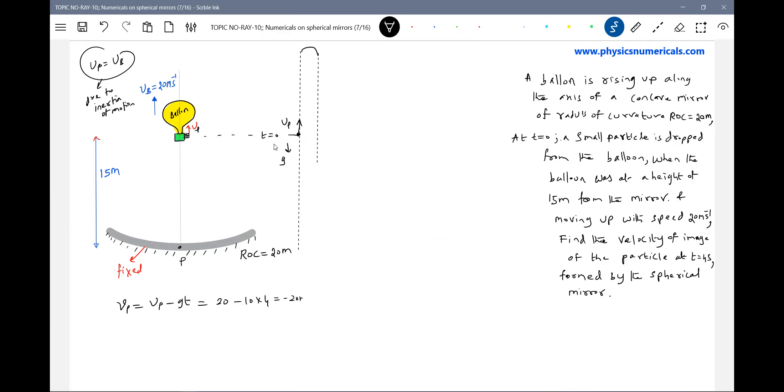So minus 20 meter per second. So what do you mean by negative sign? At that instant, the particle will be moving vertically down. It'll be having a velocity vertically down. So it should be exactly at this position. This should be the velocity of particle. How can we say it will be there only?